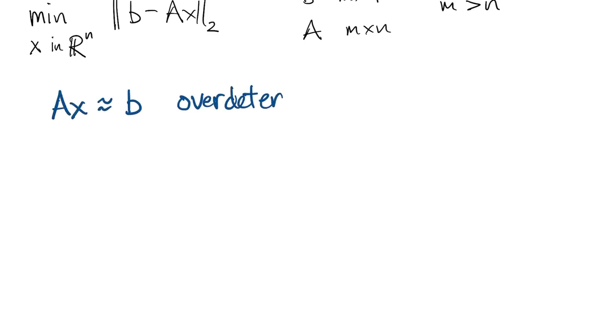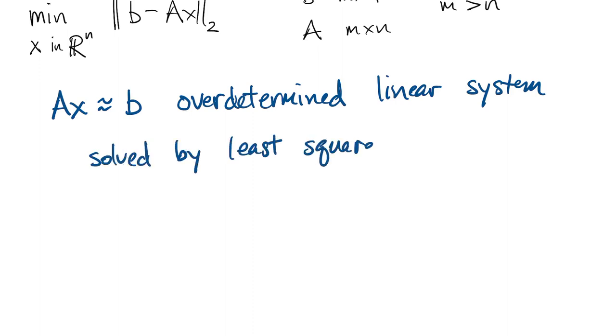We could state this as ax approximates b. It's an overdetermined linear system because we have more things we're trying to do than we have unknowns to do them with, and we're solving it by a least squares criterion.